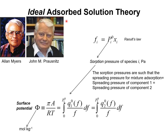In the ideal adsorption solution theory of Myers and Prausnitz, the partial fugacity of component i in the bulk fluid phase is related to the mole fraction of component i in the adsorbed phase by an expression that is the analog of Raoult's law for vapor-liquid equilibrium. Pi superscript 0 represents the sorption pressure of species i, and the sorption pressures satisfy an expression implying that the spreading pressure for mixture adsorption equals the spreading pressure of component i on its own and that of component ii.